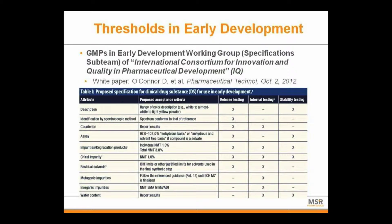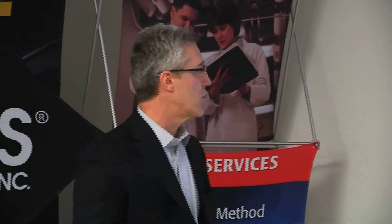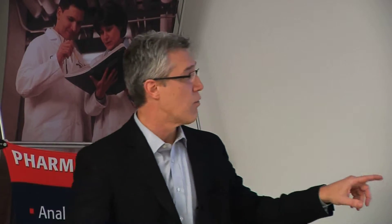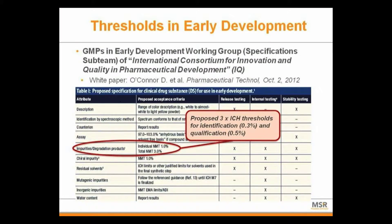They do have a white paper on specifications. I just copied some of the top part of one of the tables in the white paper to give you an idea of all the different things they're looking at, which is quite a few different aspects. They're covering chiral impurities, residual solvents. One of the things I want to highlight is that for impurities and degradation products, they're proposing basically three times the ICH threshold for identification and for qualification.